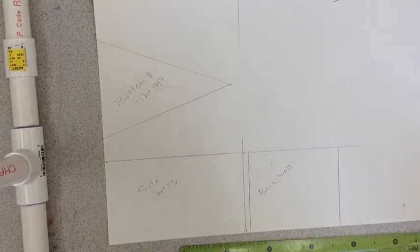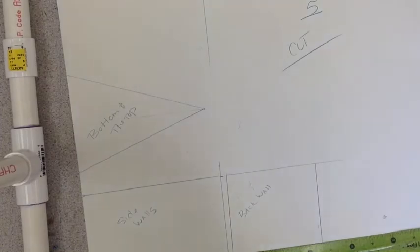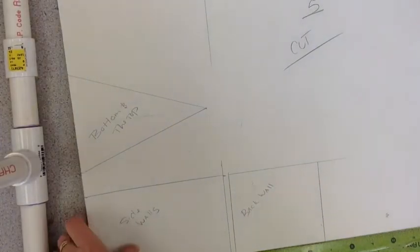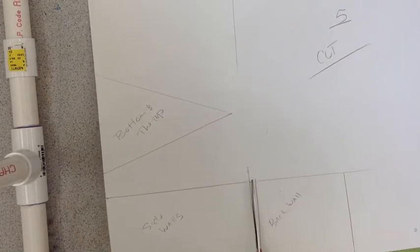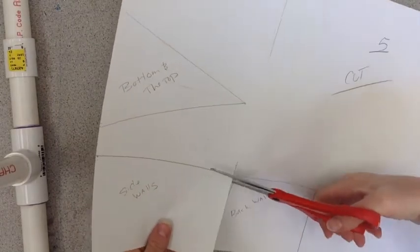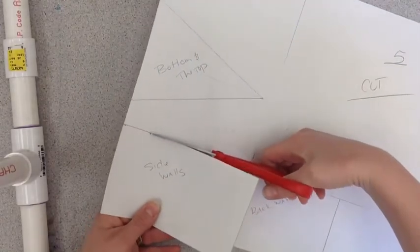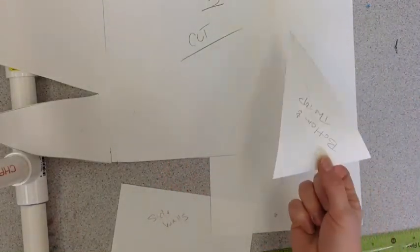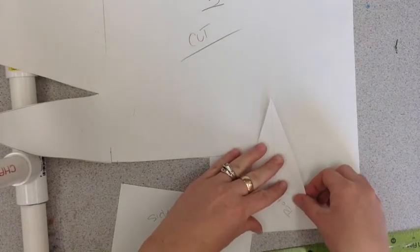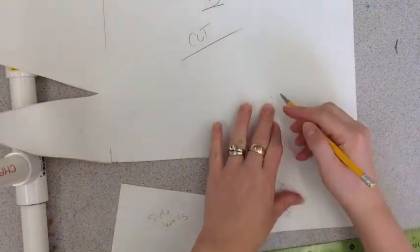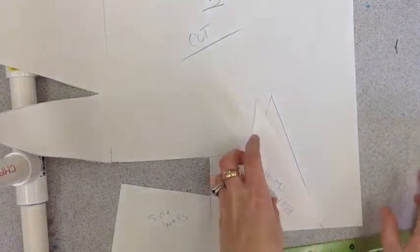I've measured out all my pieces. And now it's time to cut them out. We know that we have a top and a bottom that are the same size. So I'm going to trace another one of these. So I don't forget that I have two pieces I need to cut.